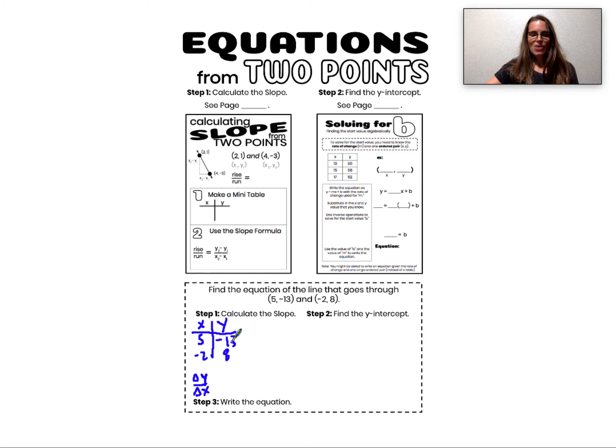What is the change in y from -13 to positive 8? To go from -13 to 8, well first I add 13 to get to 0, then I add 8 more. To get from -13 to 8, I add 21. My change in y is 21.